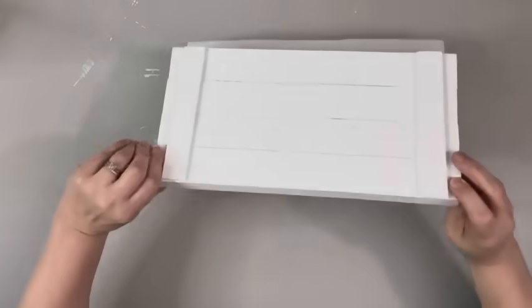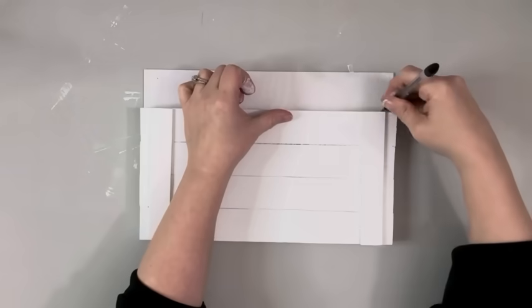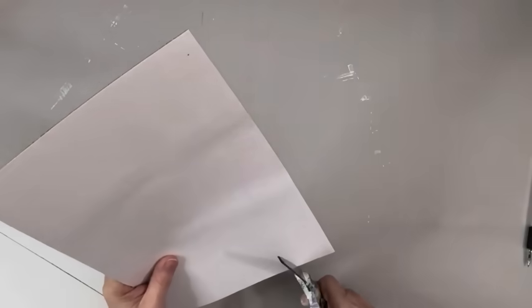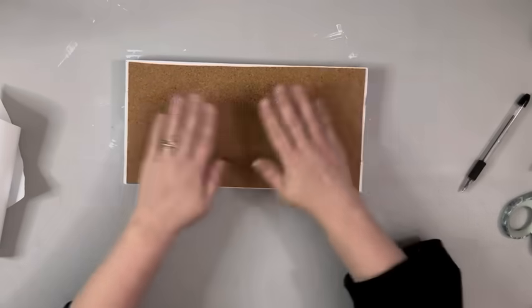I then take this adhesive corkboard from Dollar Tree and I put it on the bottom and cut off the excess and then place it down on the bottom.